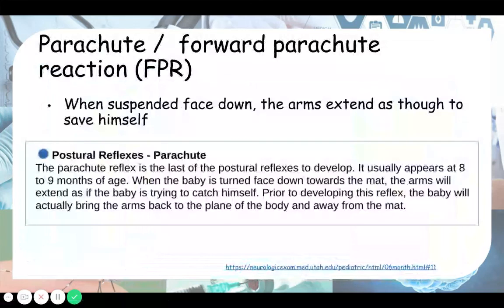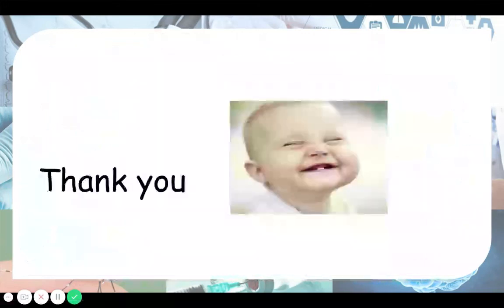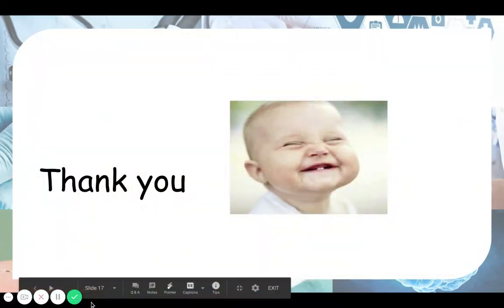Finally, there is the parachute reflex — another saving reflex — where the arms extend when the baby is suspended face down. So in summary: one reflex for head righting, one for the legs to support weight, and two saving mechanisms — one when sitting and one when falling face-forward. That's all I have for you. Thank you, hope it's helpful!